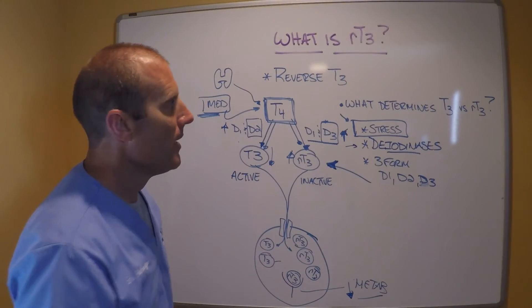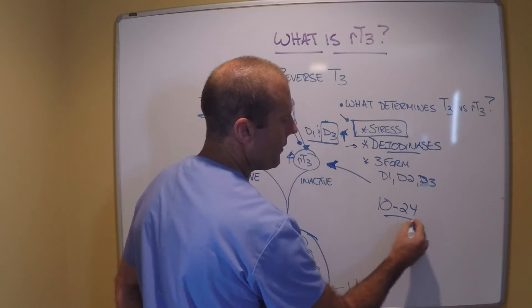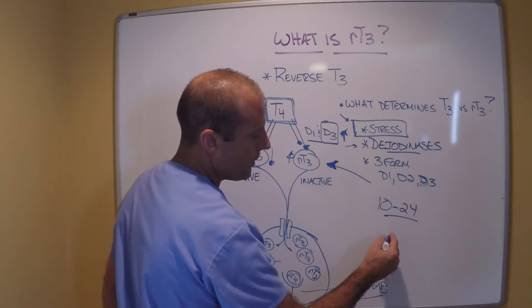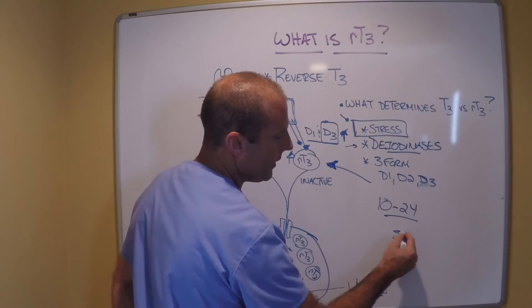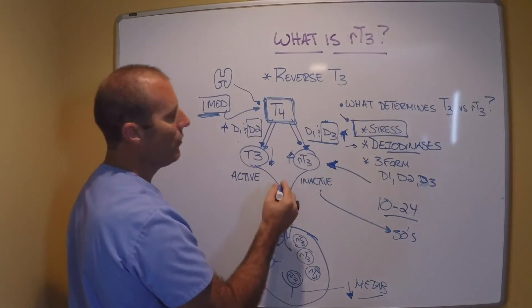Her hair is thinning out. And while the normal lab range is somewhere between 10 and 24 and then varies from different labs, her reverse T3 was up into the 30s.